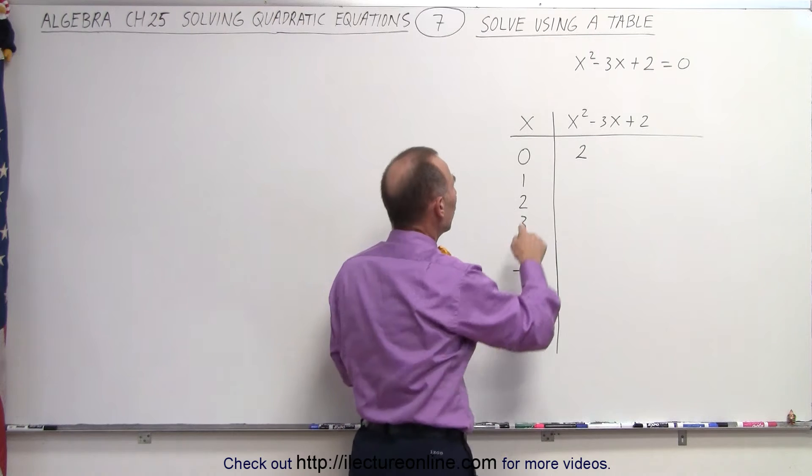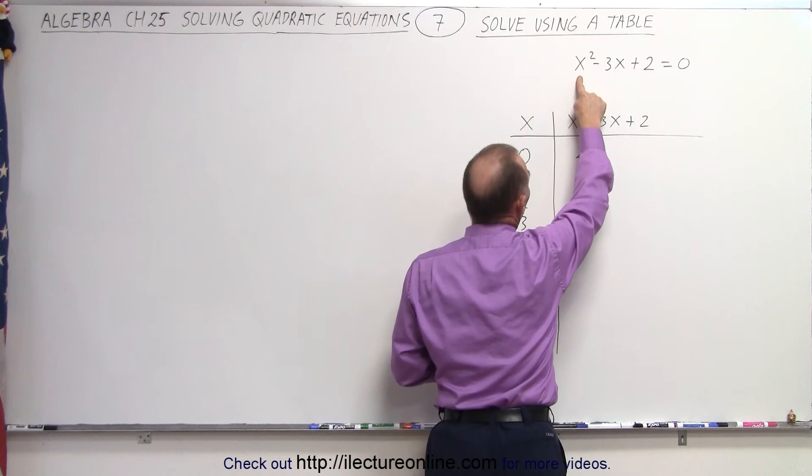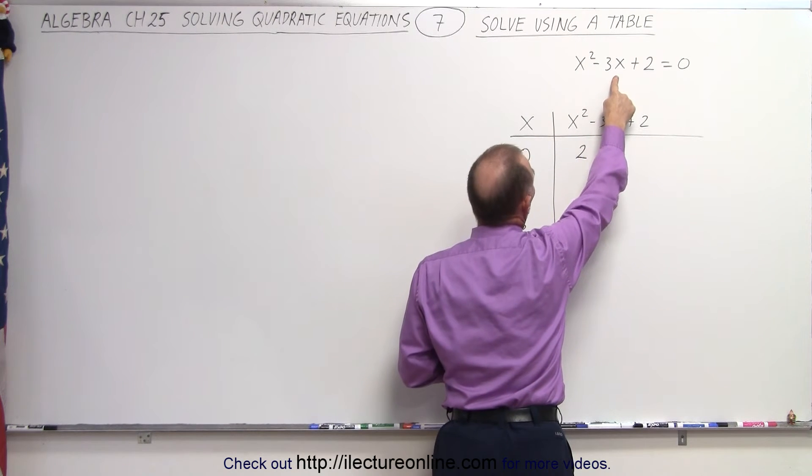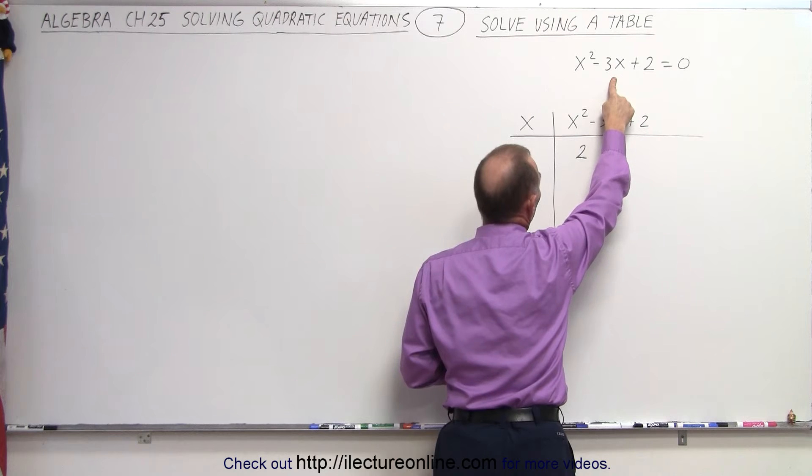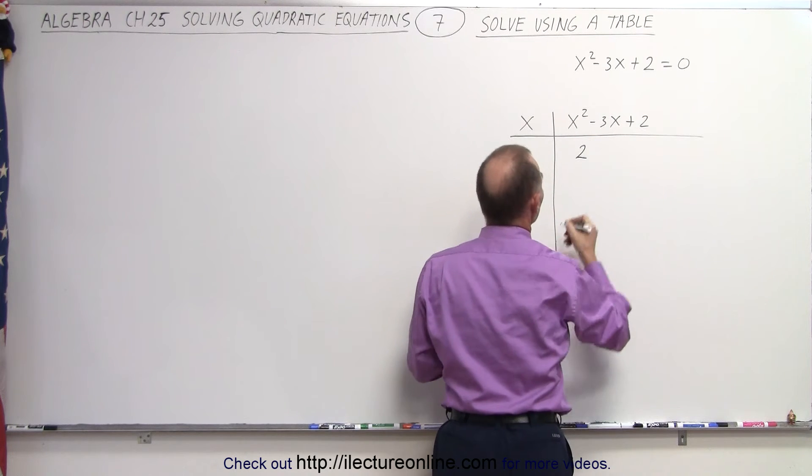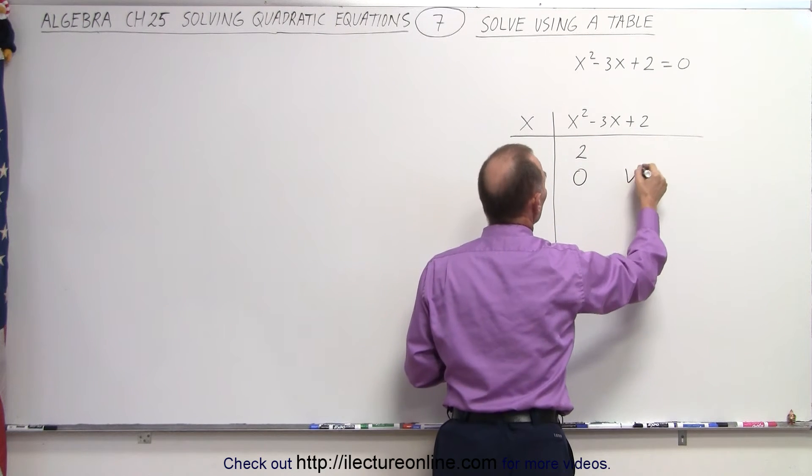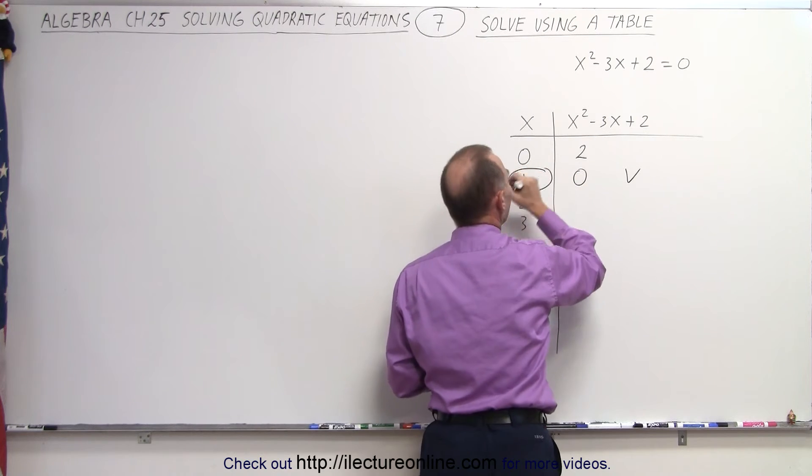Next, when we plug in 1: 1² is 1, minus 3 times 1, that's 1 - 3, which is -2 + 2, which equals 0. That means x = 1 is one possible solution.